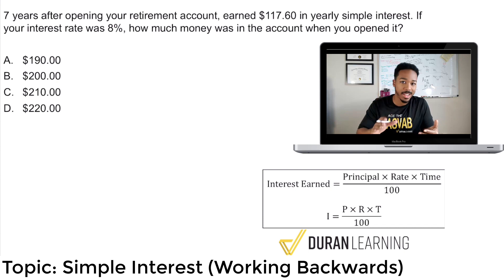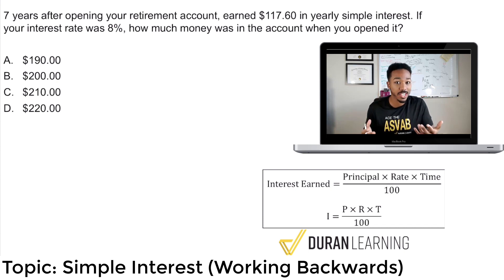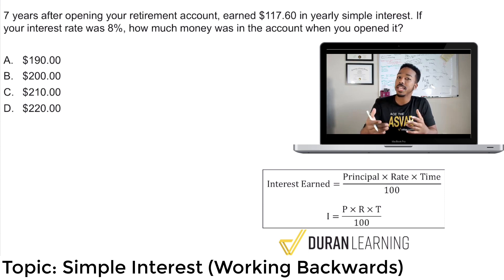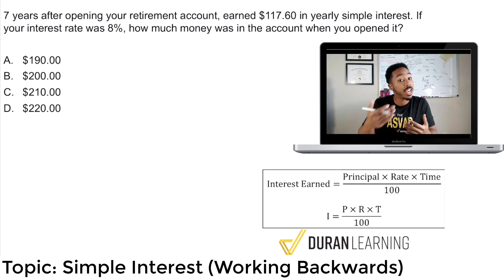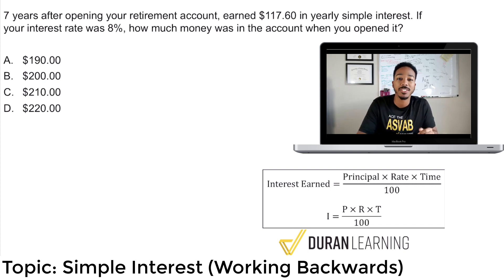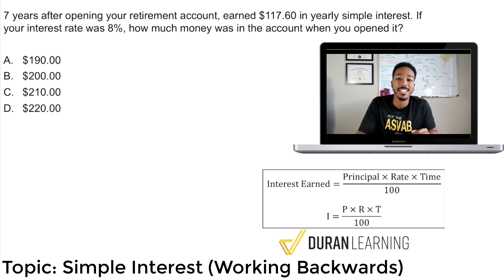Because let me tell you right now, on the ASVAB arithmetic reasoning section especially, it is not just about knowing your formulas and where to plug in. Sometimes you've got to work backwards. Sometimes they're going to give you the end result and you may not realize it if you're not being careful about reading the information. So that's what we're going to teach you today in this video.